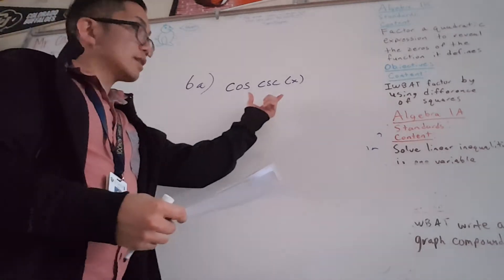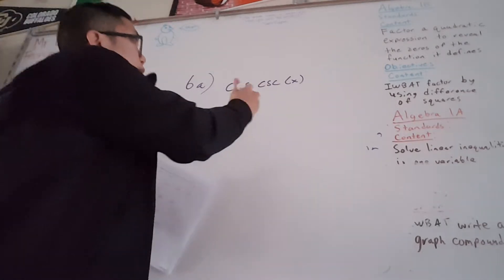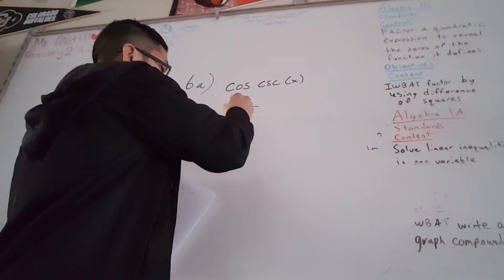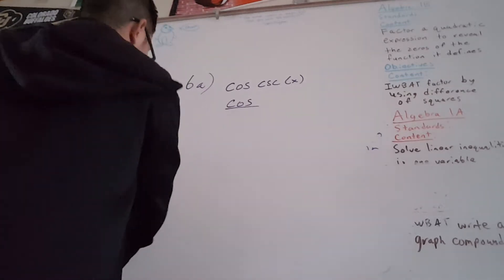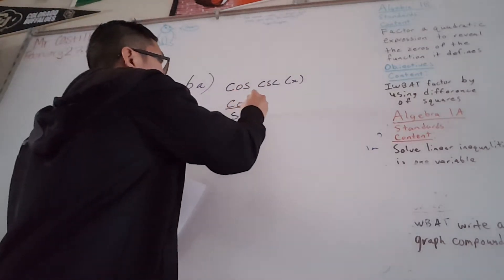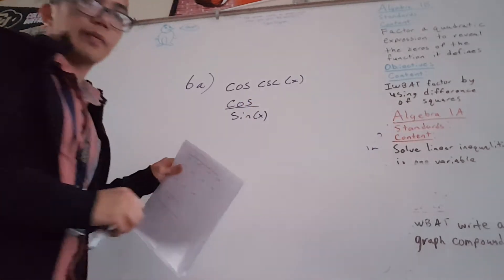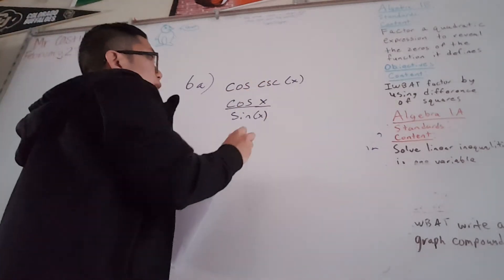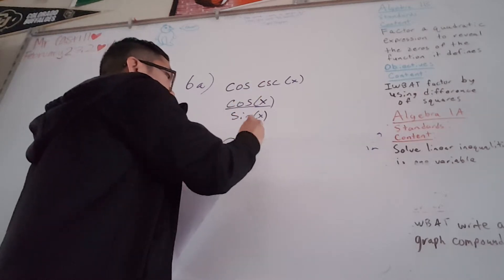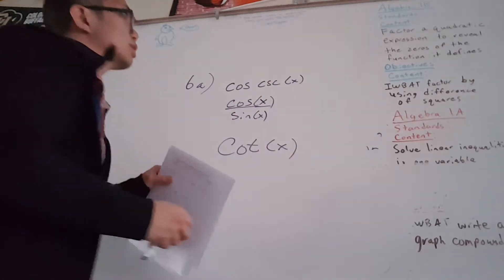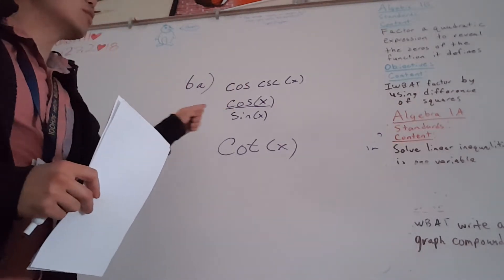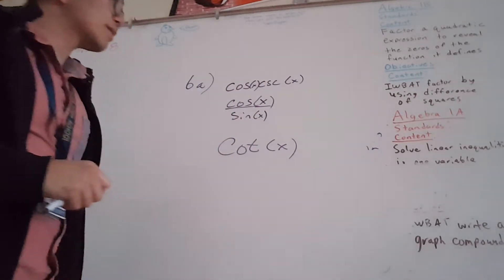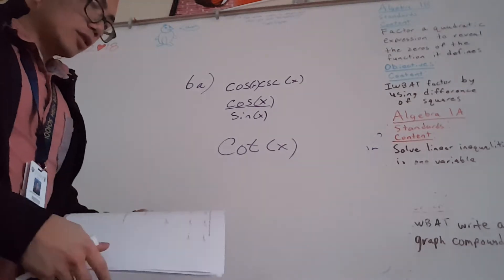Now, the cosecant is really 1 over the sine. So this is cosine over sine. Because there needs to be an argument here, this will be cosine x over sine x. Cosine over sine is the cotangent. So that is the answer for the composition — the cosine times the cosecant is really just cosine over sine, which is cotangent x. So that is letter A.